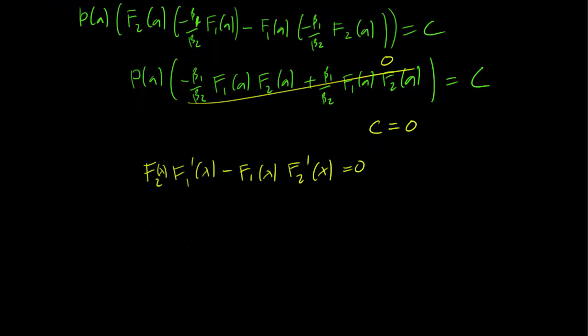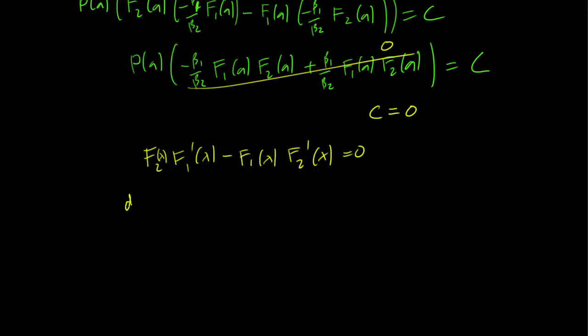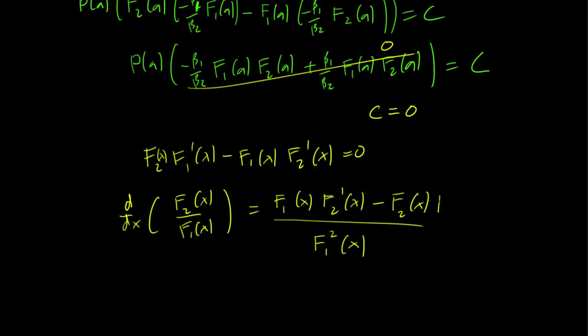And the last step is just using the quotient rule. This equals the derivative of f2 x over f1 x, and by the quotient rule, we square the bottom function, and we have low d high minus high d low, which is exactly what we have over here, so this is equal to 0.